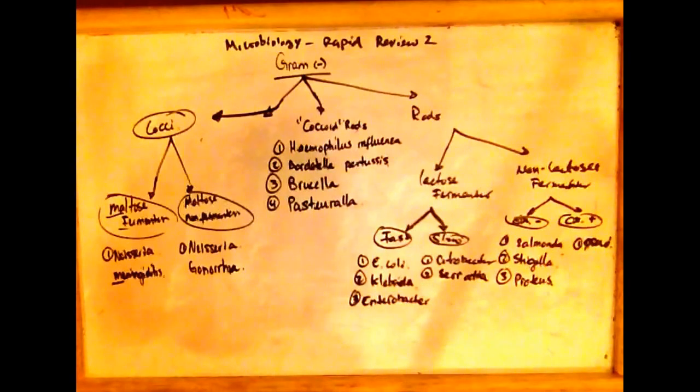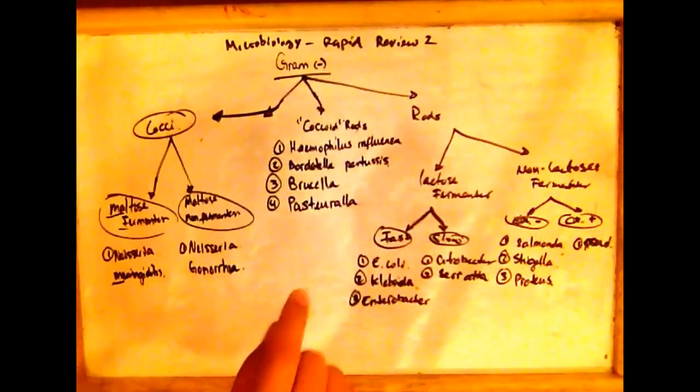So cocci rods. There are four important organisms that we need to know. One is Haemophilus influenzae. The second one is Bordetella pertussis, which causes the whooping cough. Brucella, and Pasteurella.